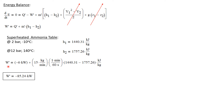Now we have everything we need to solve for W dot. It equals Q dot, which is minus 6 kilowatts, plus the mass flow rate of 15 kilograms per minute — converting minutes to seconds — times H1 minus H2. We get W dot, the power requirement of the compressor, is minus 85.24 kilowatts. By convention, the negative sign indicates that power is flowing into the system, which is expected for a compressor.